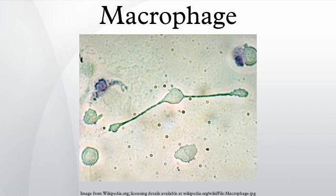Heart disease: Macrophages are the predominant cells involved in creating the progressive plaque lesions of atherosclerosis. HIV infection: Macrophages also play a role in human immunodeficiency virus infection. Like T cells, macrophages can be infected with HIV, and even become a reservoir of ongoing virus replication throughout the body.